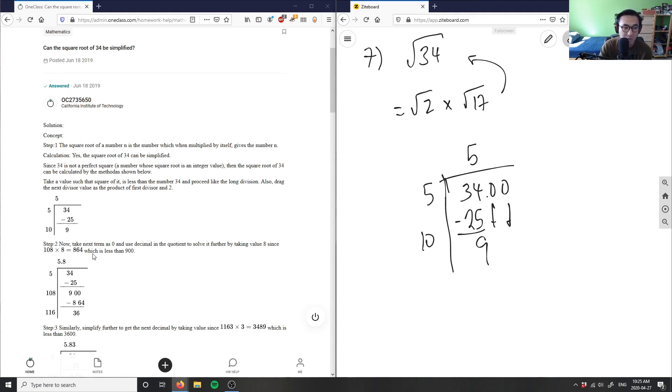I have a 10 here first, and then I'm taking the next term which is zero. We use decimal in the quotient to solve it further by taking the value of 8, so this becomes 108 here. This is 900 here, and then 108 times 8 would be 864, which is less than 900. Subtract that, you have 36.